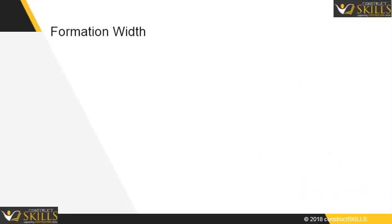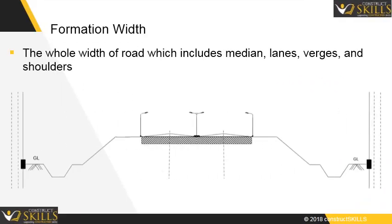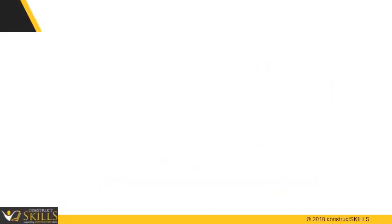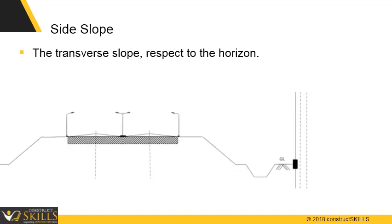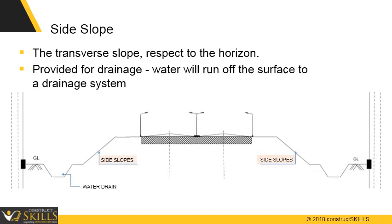Formation width: the whole width of road which includes median, lanes, verges, and shoulders. Side slope: the transverse slope with respect to the horizon, connecting the shoulder to the stormwater drain to drain the water.